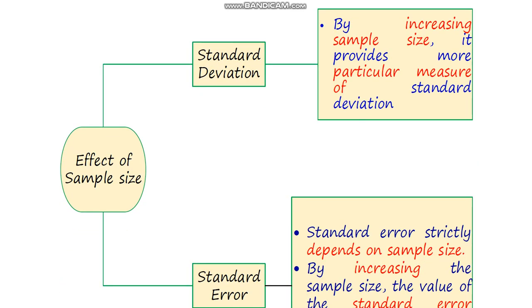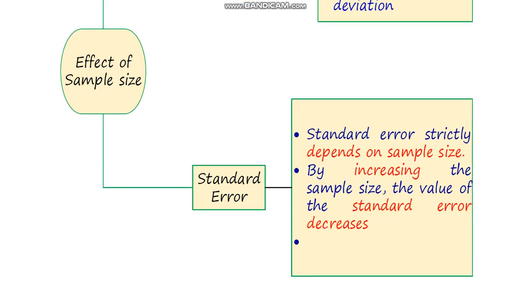Now, the effect of sample size on these two concepts. For standard deviation, increasing the sample size provides more reliable results and a more precise measure of standard deviation. For standard error, it strictly follows sample size — by increasing sample size, the value of standard error decreases. A minimum value of standard error means the reliability of the sampling distribution of the mean is good.